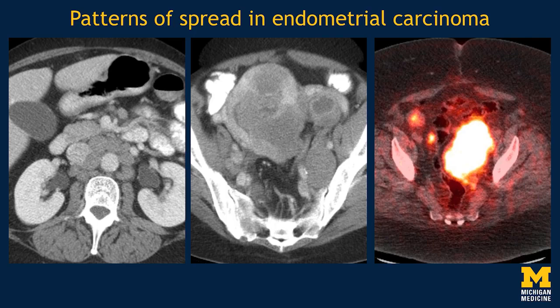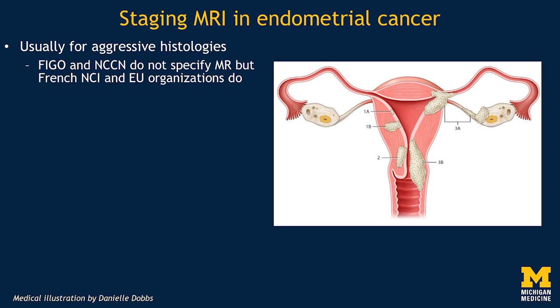All of these endometrial types have similar patterns of spread when they become advanced — we're going to see pelvic and para-aortic lymph nodes, local invasion, and this tissue is extremely avid on FDG PET-CT. CT and PET can be used to look for distant disease, but they are not usually as helpful for T-staging. For T-staging, we really rely on MRI. The role of MRI for evaluation of uterine neoplasms is evolving, largely reserved for aggressive histologies in most U.S. centers. However, in parts of Europe, MRI is used much more commonly, and I think we're headed more and more in that direction — it has a unique ability to establish depth of invasion preoperatively, helping with risk stratification and determining the strategy for dealing with nodes in the operating room.